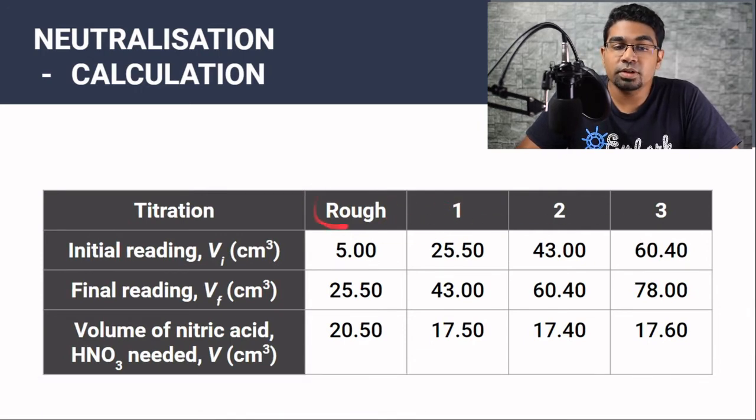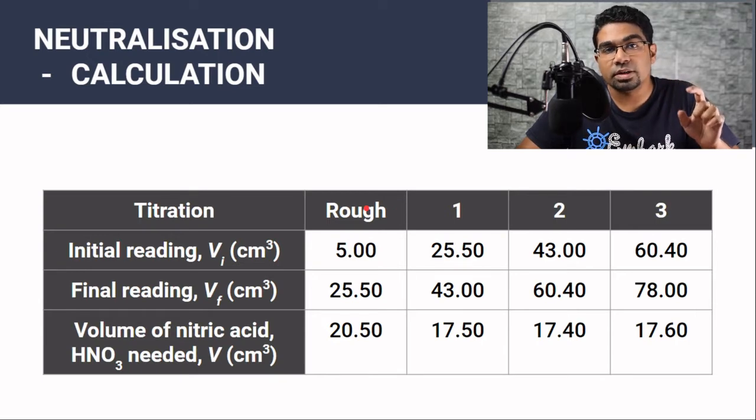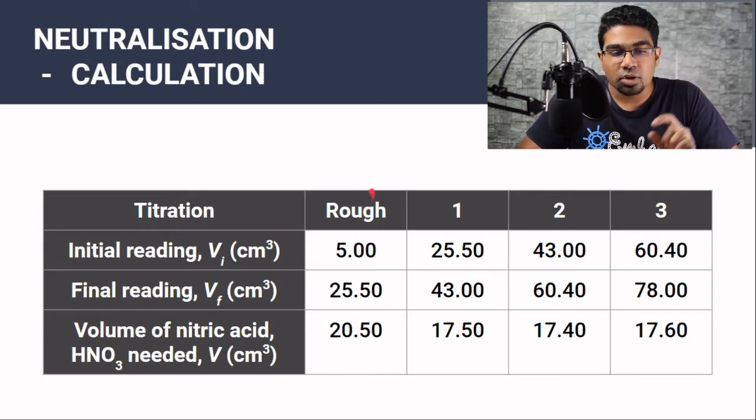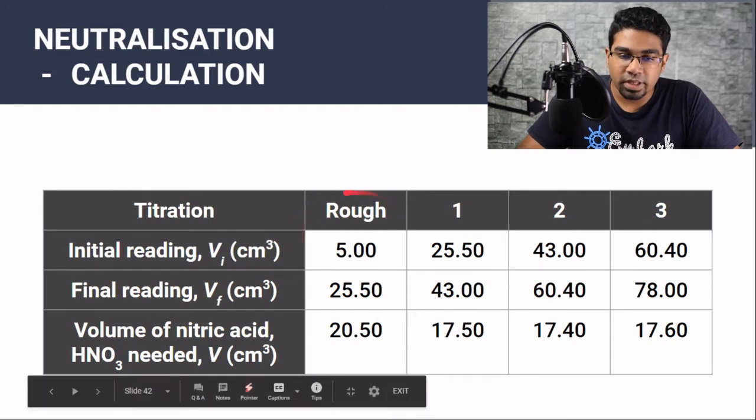First, we have a rough value. The rough value is to get the estimate, the volume of acid that is needed to react completely. But this is not an accurate reading. So we will ignore this in calculation.